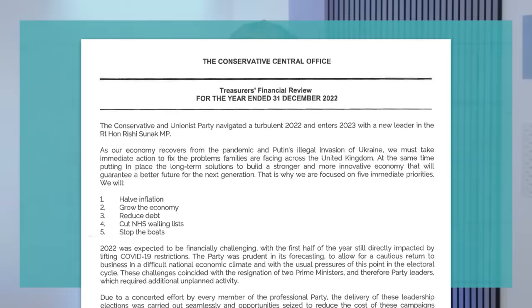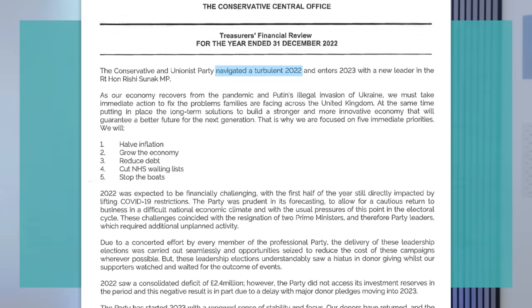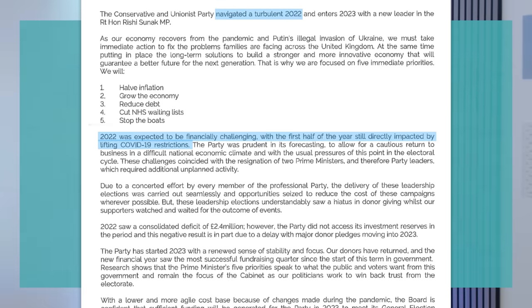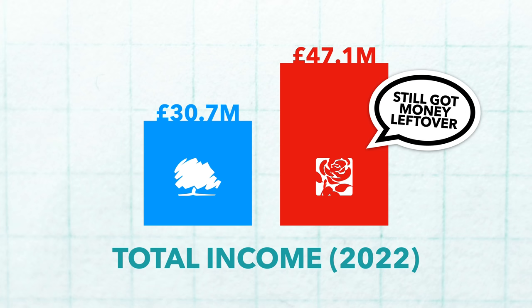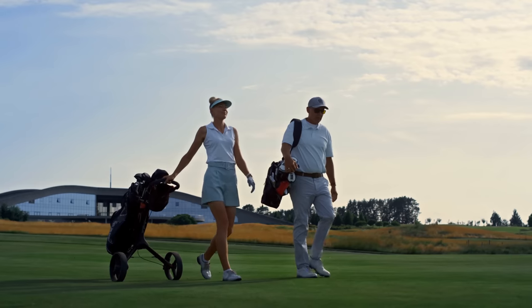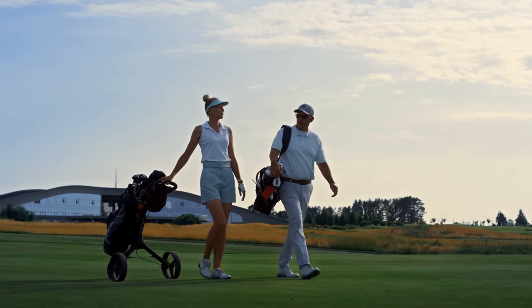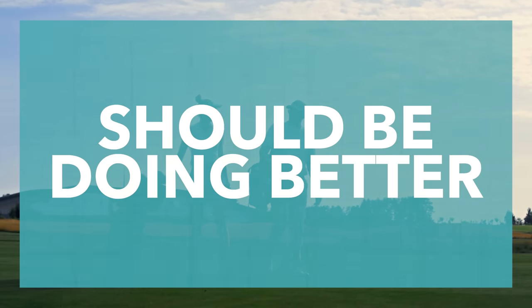In the opening statement of this document, the Conservative Treasurer said that the party had navigated a turbulent 2022, and that 2022 was expected to be financially challenging, with the first half of the year directly impacted by lifting COVID restrictions. These challenges coincided with the resignation of two Prime Ministers and four party leaders, which required additional unplanned activity. So all in all, Labour had a higher income by more than £10 million, increased this income by more than the Tories, and actually ended the year in the black. Considering that Labour rely more on trade unions and individual donations whereas the Tories rely more on wealthy backers, it's fair to have assumed the Tories should probably be in a better financial position.